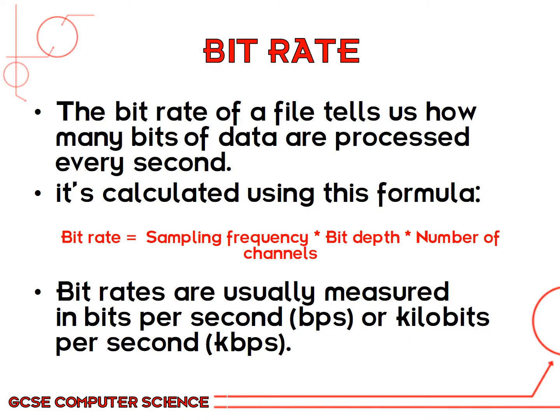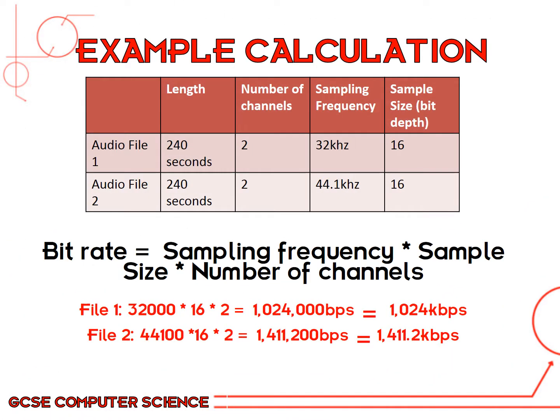The bit rate of a file tells us how many bits of data have been processed every second. You can calculate this using the formula: bit rate equals sampling frequency multiplied by bit depth. I've also included number of channels, because some audio tracks — like CDs — have left and right channels, giving two channels. DVDs and Blu-rays might have 5.1 or 7.1 channels for surround sound. Bit rates are usually measured in bits per second or kilobits per second. The best way to understand this is to pause the video and read over what I've said.